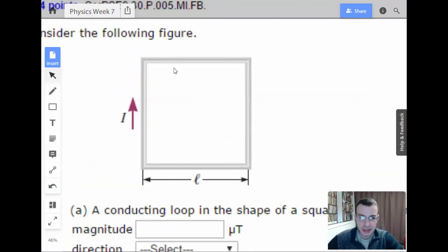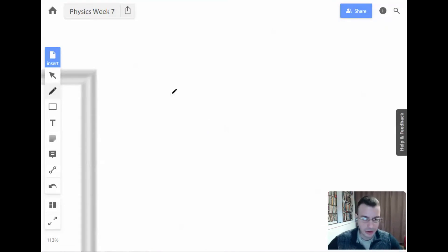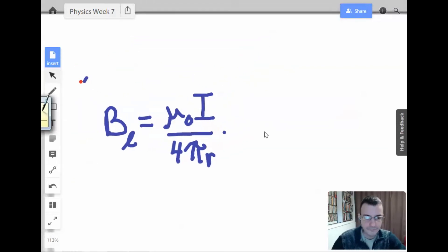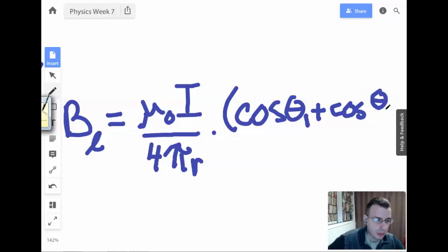Each of these wires here is going to create a magnetic field. Whenever you see a magnetic field in wires, there's an equation you should think of. I'm going to call this BL, the magnetic field due to a line. So you have mu not I over 4 pi R, and then we're going to multiply this by cosine of theta 1 plus cosine theta 2.